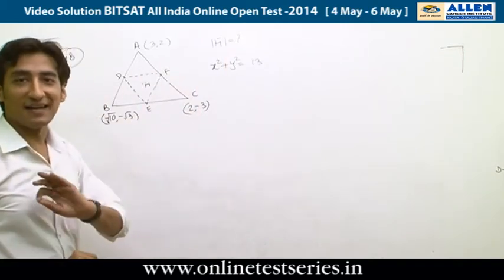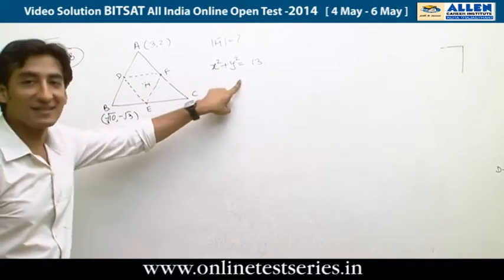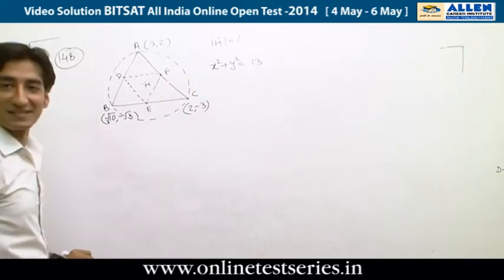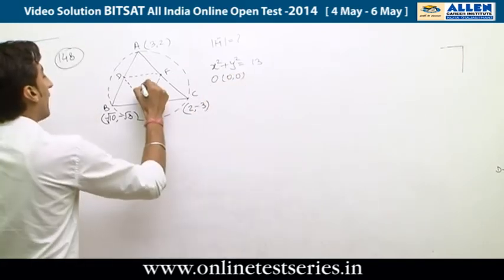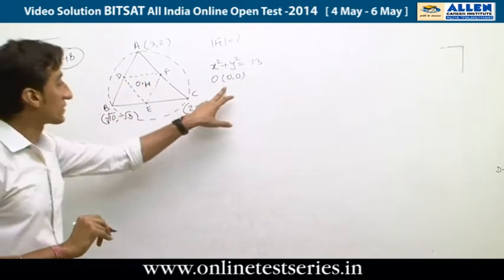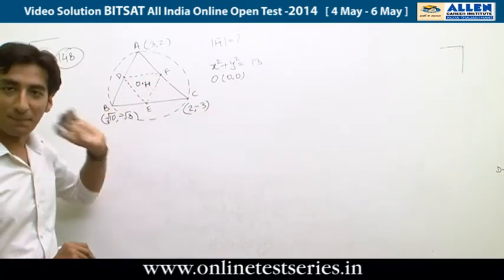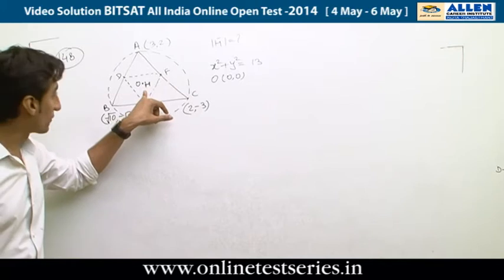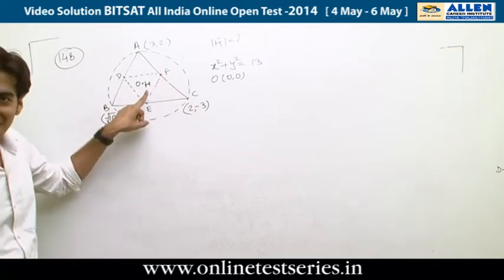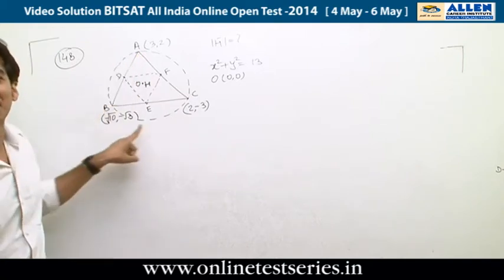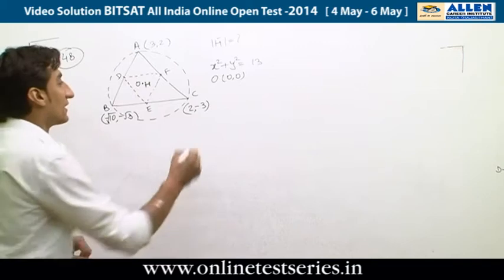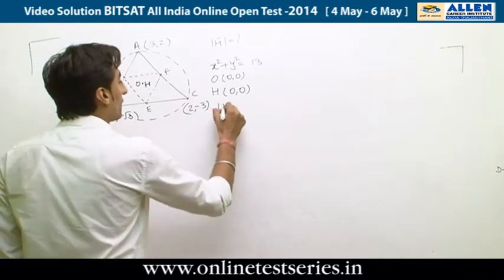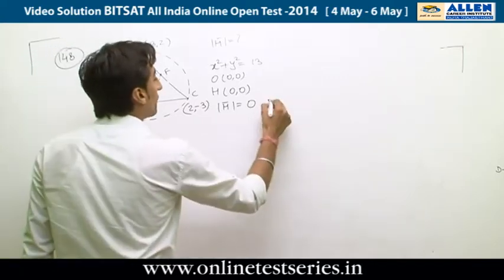All three points lie on the circle x² + y² = 13, whose center is the origin (0, 0). This origin is also the circumcenter of triangle ABC. The orthocenter of the midpoint triangle DEF coincides with the circumcenter of the original triangle ABC. Hence the coordinates of H are (0, 0), the magnitude of H is 0, and the answer is D.